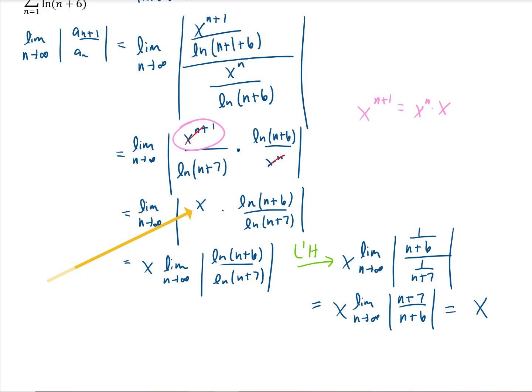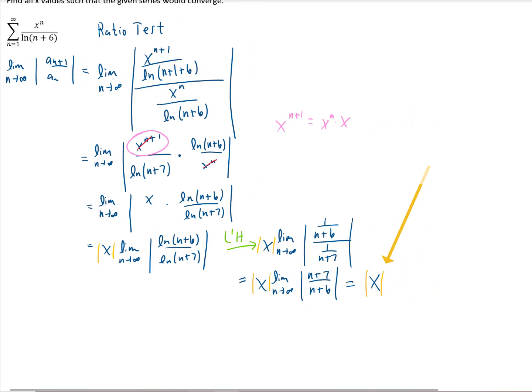Now, I did make a mistake here. I took this x out of these absolute values, so I needed to put some absolute values on all of these x's all the way down the line. And okay, now the final result of the ratio test says that we get a converging series if this limit is less than one.